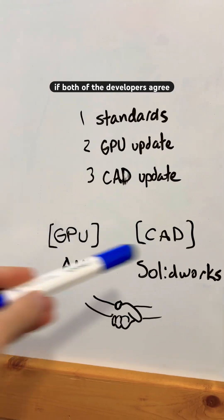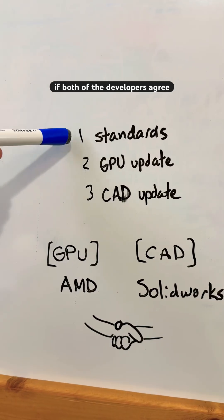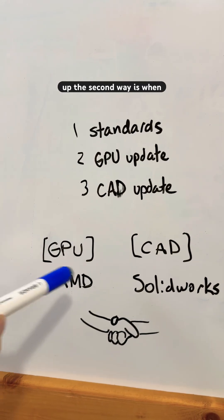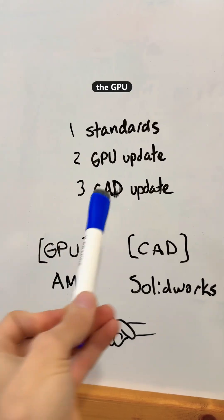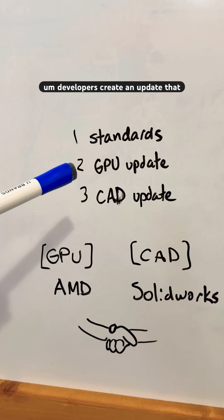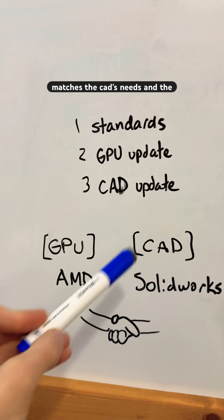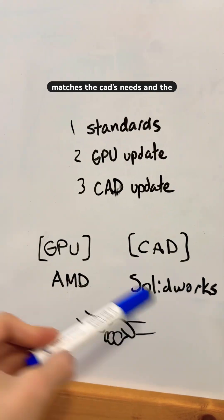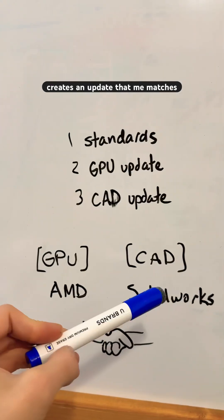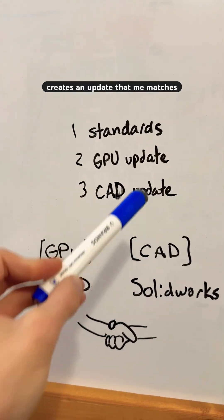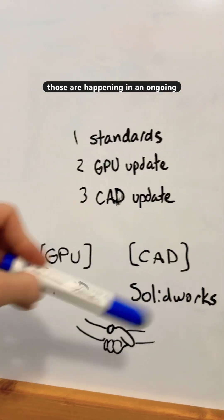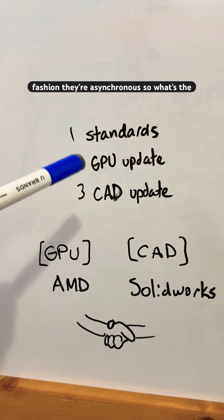First, if both developers agree to a standard and those match up. The second way is when the GPU developers create an update that matches the CAD's needs. The third way is when the CAD creates an update that matches the GPU's needs. Both of those are happening in an ongoing fashion — they're asynchronous.